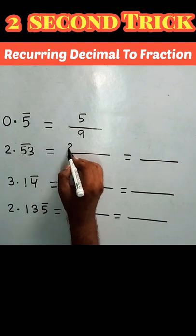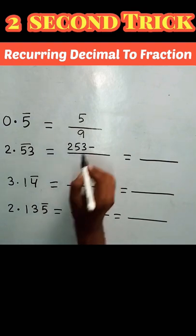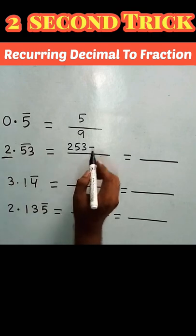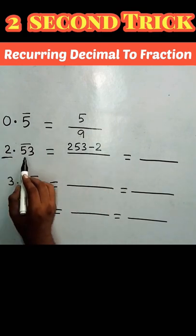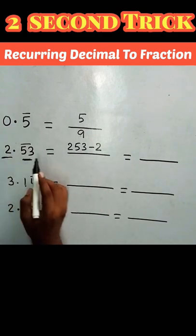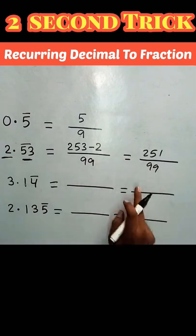In the second one, first you copy all the numbers, then see the number that doesn't have a bar—that is 2—you subtract that. After the decimal, there are two digits that have a bar, so I will write here 2 times 9. So the answer is 251 by 99.